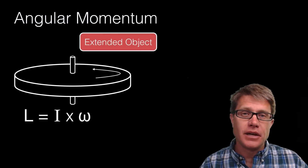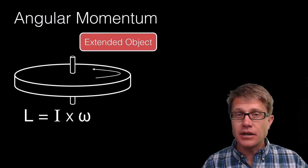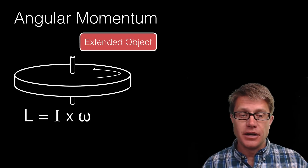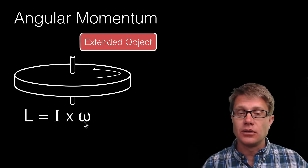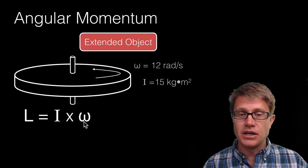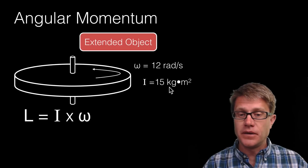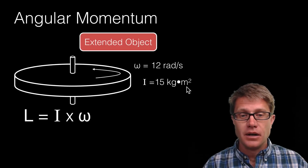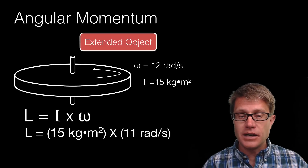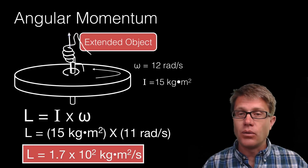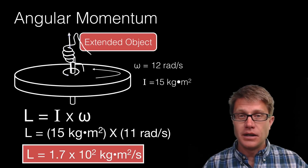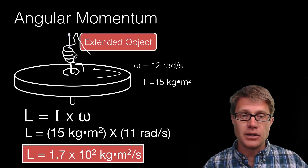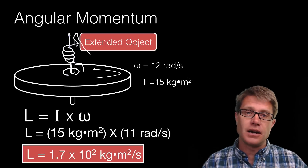You also should be able to calculate the angular momentum of an extended object, like this rotating cylinder. We multiply the rotational inertia times the angular velocity. For example, with an inertia of 15 kilogram meters squared, we get 1.7 × 10² kilogram meters squared per second. Again, this is a vector — the right hand rule shows it is acting in the upward direction.